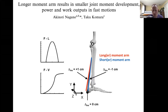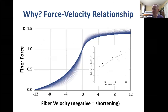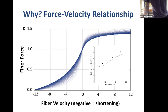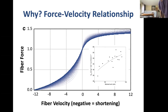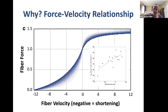This relates to the force-velocity relationship. During a concentric contraction — like shortening the calf muscles during push-off — the longer the moment arm for that muscle (the further the muscle is from the ankle joint center), the faster that muscle must contract to rotate the joint at a given speed.